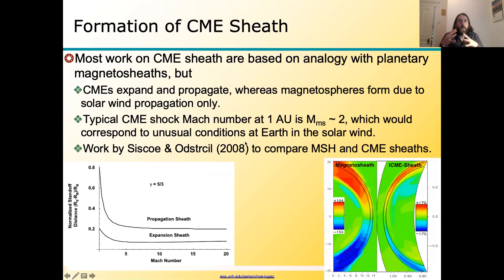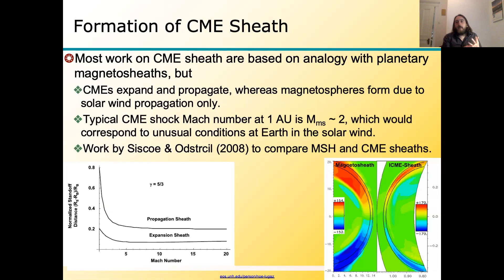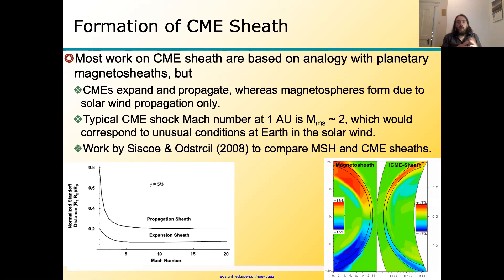Let's go back to the physics of sheath formation. Most work on CME sheaths is based on analogy with planetary magnetosheaths. However, CMEs expand and propagate, whereas planetary magnetosheaths form only due to the interaction with the solar wind — there's no expansion in a planetary magnetosheath. In addition, the typical Mach number for CMEs is 1.5 to 2, which would be a very low, unusual Mach number for a planetary bow shock. There's only one work that looked at this in a logical way — by Siscoe and Odstrcil — trying to explain how CME expansion creates very different sheaths compared to planetary magnetosheaths.